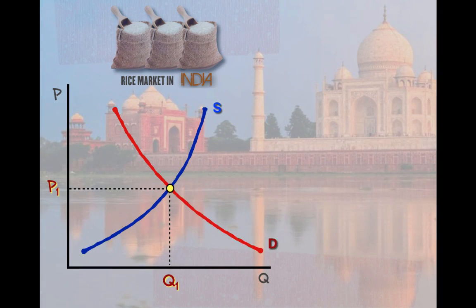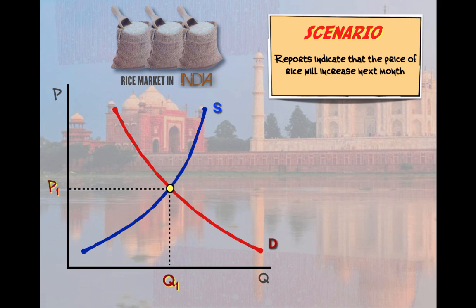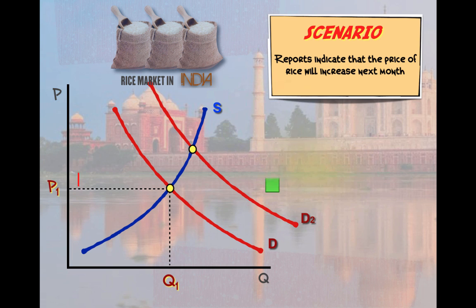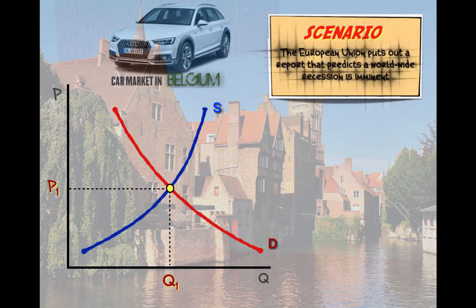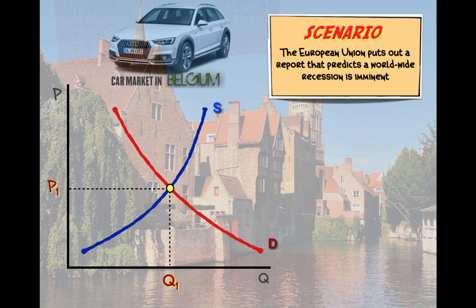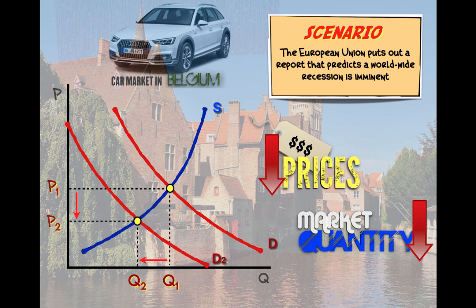Next is a market for rice in India. Suppose reports indicate that the price of rice will increase next month. Knowing that rice will soon become more expensive, consumers are going to rush into the marketplace and buy rice at the current price before it rises, causing demand for rice to increase and driving up its price while increasing the quantity available in the market. Next is a graph for the car market in Belgium. Suppose the European Union puts out a report predicting that a worldwide recession is imminent. Belgian consumers are going to become scared for the future and less likely to buy expensive products like cars, so demand for cars in Belgium is going to decrease, causing prices to decrease and the quantity sold in the market to decrease.